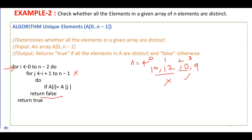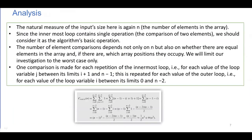Now we analyze this algorithm. The natural measure of input size is n. The innermost loop, the j loop, has a single operation — a comparison — as the basic operation. The number of comparisons depends not only on n, but also on whether there are equal elements in the array and which positions they occupy. So we limit our investigation to the worst case only.